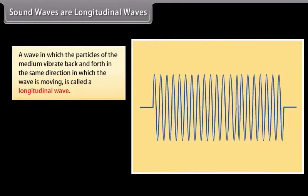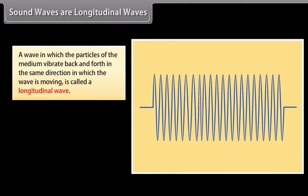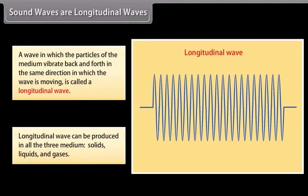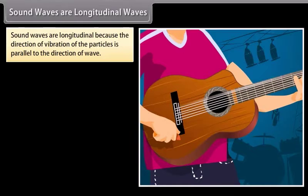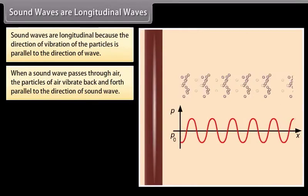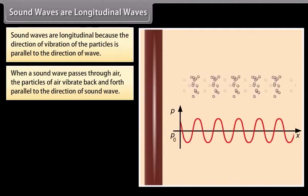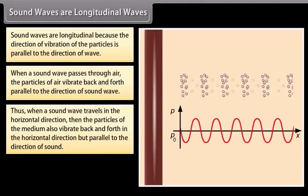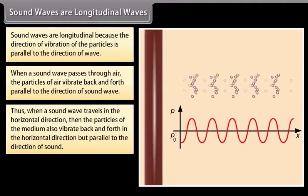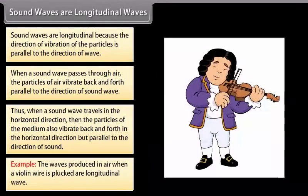Sound waves are longitudinal waves. A wave in which the particles of the medium vibrate back and forth in the same direction in which the wave is moving is called a longitudinal wave. Longitudinal waves can be produced in all the three mediums: solids, liquids and gases. Sound waves are longitudinal because the direction of vibration of the particles is parallel to the direction of wave. When a sound wave passes through air, the particles of air vibrate back and forth parallel to the direction of sound wave. Thus, when a sound wave travels in the horizontal direction, then the particles of the medium also vibrate back and forth in the horizontal direction but parallel to the direction of sound. For example, the waves produced in air when a violin string is plucked are longitudinal waves.